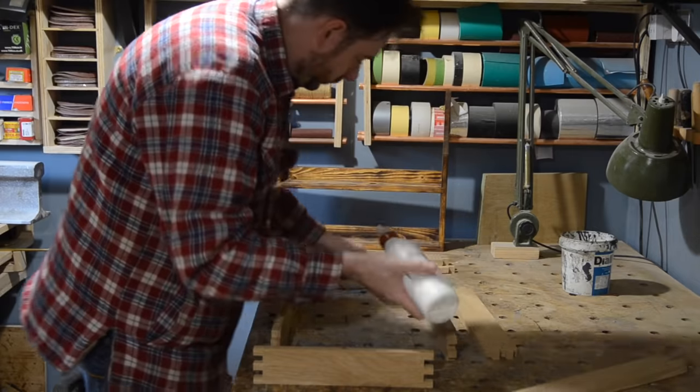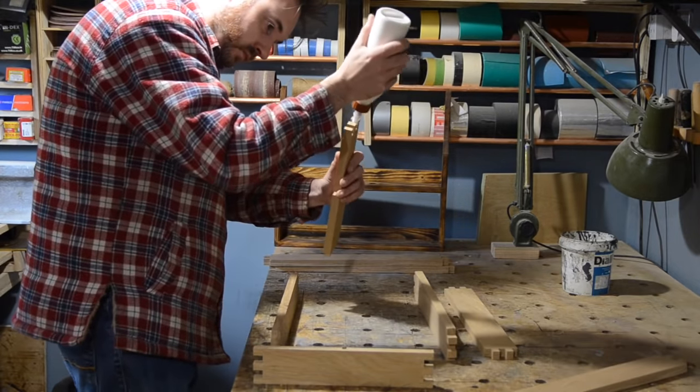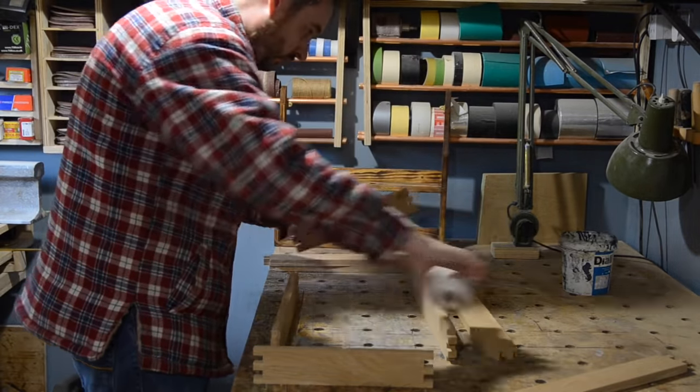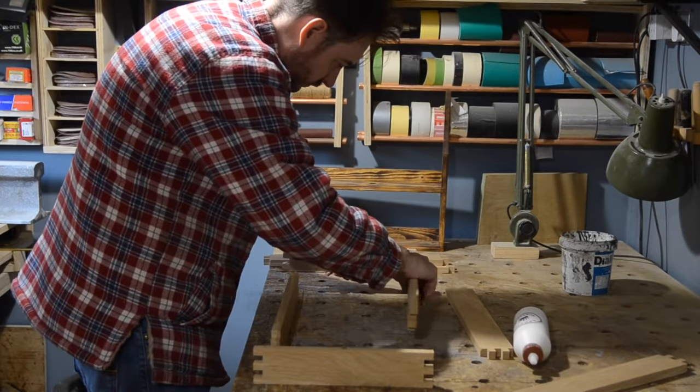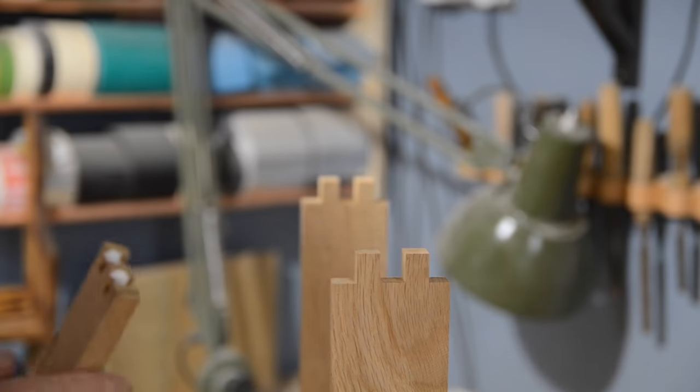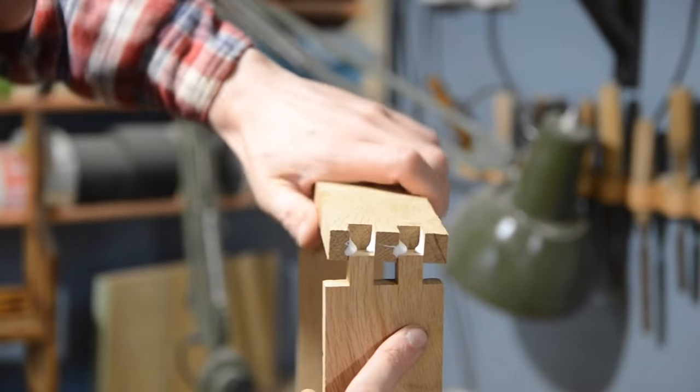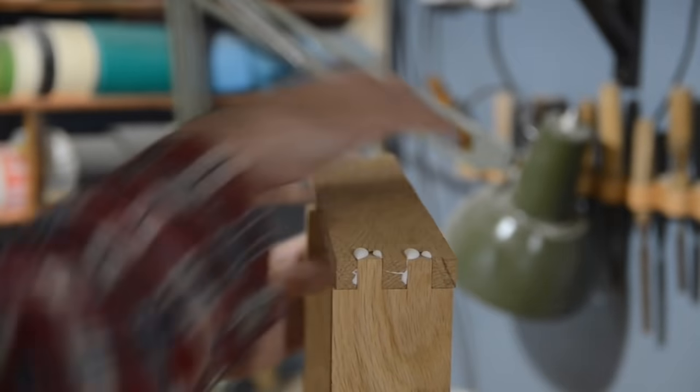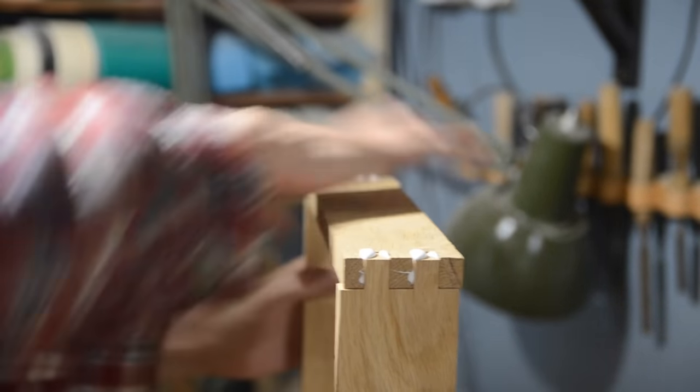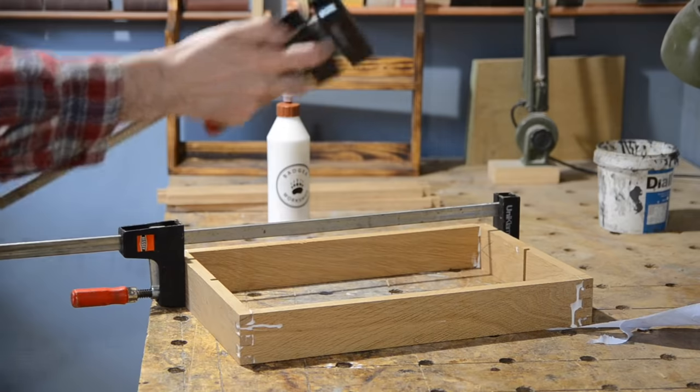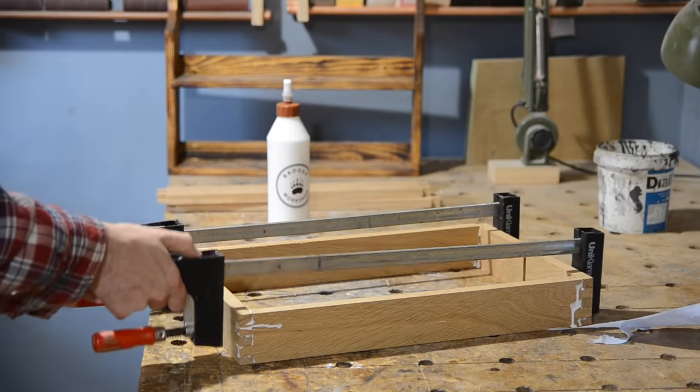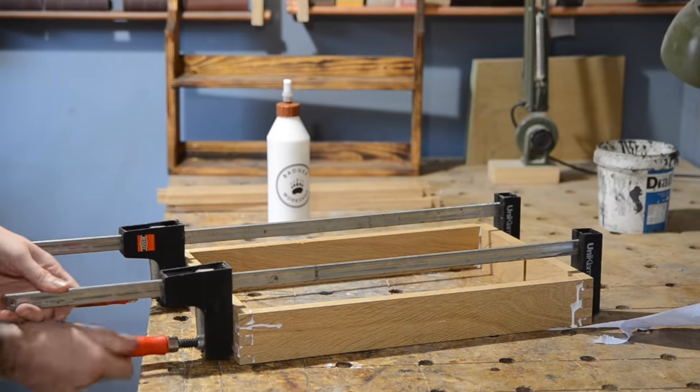With a groove cut in both sides, I'm going to put together again but this time with some glue. I can get some clamps on pulling it in every direction, checking and adjusting that it's square.